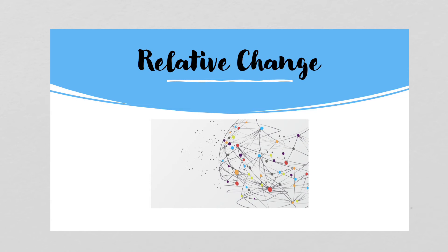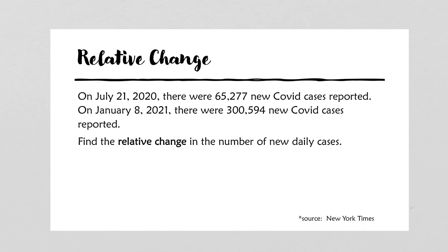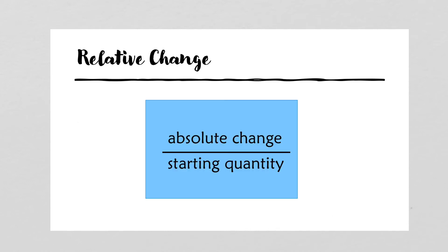Let's take a look with our examples again. On July 21, 2020, recall there were 65,277 new COVID cases, and January 8, there were 300,594 new COVID cases. This time, instead of finding the absolute change, we want to find the relative change. The formula for relative change is the absolute change divided by the starting quantity, where absolute change is the absolute value of the ending quantity minus the starting quantity, divided by the starting quantity.